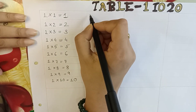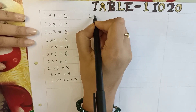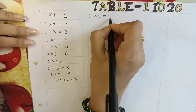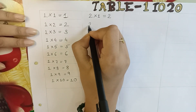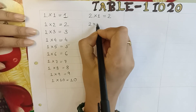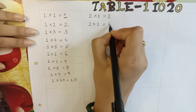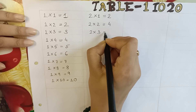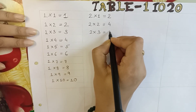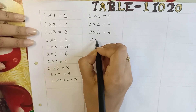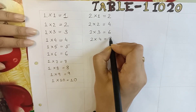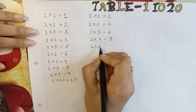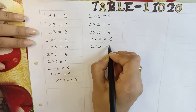Okay, next table 2. 2 into 1 is equal to 2. 2 into 2 is equal to 4. 2 into 3 is equal to 6. 2 into 4 is equal to 8. 2 into 5 is equal to 10.